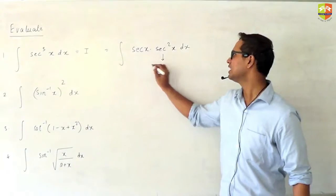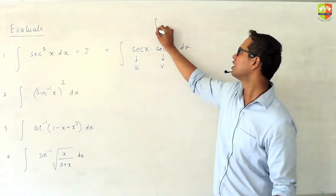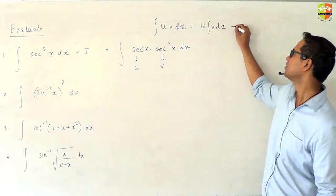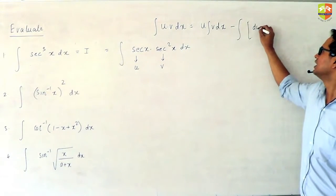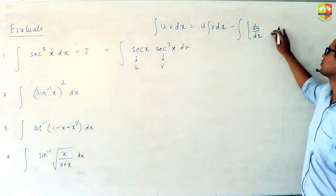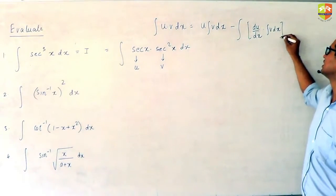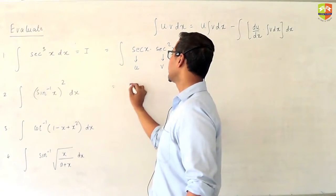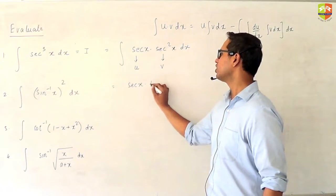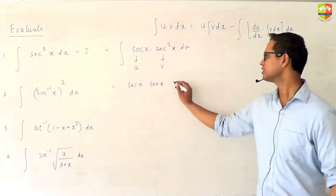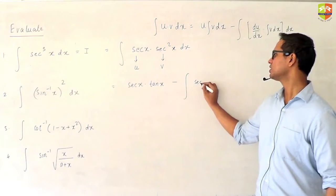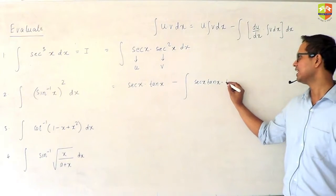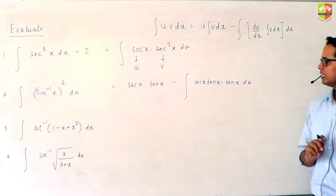I take sec²x as v and sec x as u. Recall the formula: the integral of u·v dx equals u times integral(v dx) minus integral of (du/dx times integral(v dx)) dx. So according to the formula, it will be sec x times tan x minus the integral of the derivative of sec x, which is sec x·tan x, times tan x dx.